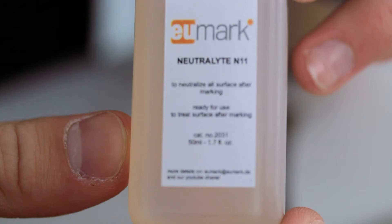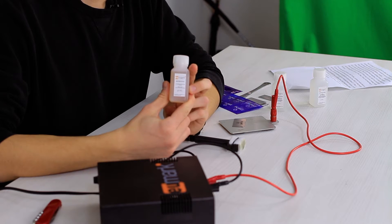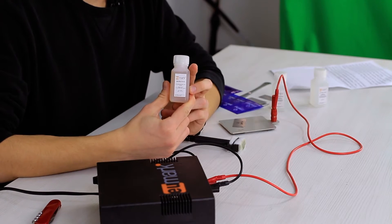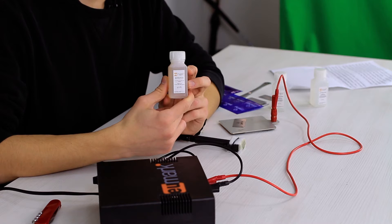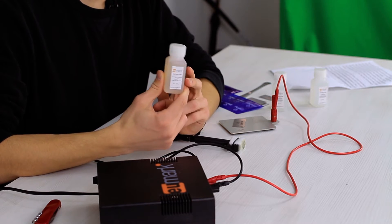Neutralite if you work with non-stainless steel or conductive surfaces or other metals. You must neutralize after marking. That means you need to put it on a towel to be wet and just clean the surface you marked.